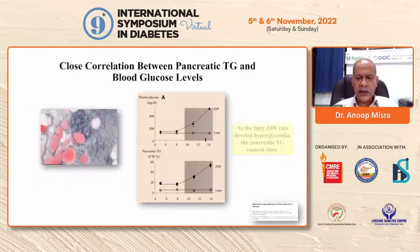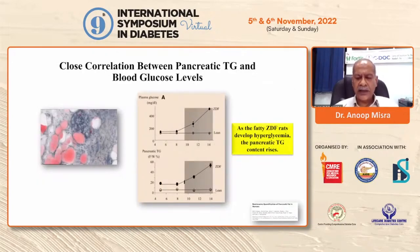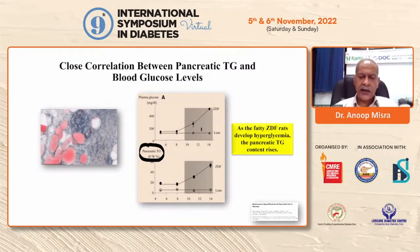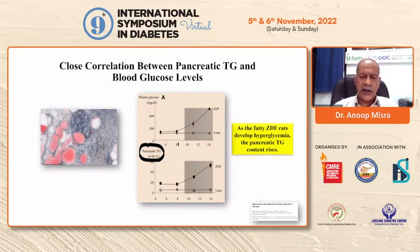Subsequently, in rats it was found that as pancreatic triglyceride content increased, blood sugar also increased. The previous slide showed the relationship between BMI and pancreatic fat, and here pancreatic triglyceride content is related to blood glucose. These early studies clearly showed that pancreatic fat is related to blood glucose, and that hyperglycemia worsens as pancreatic fat increases.